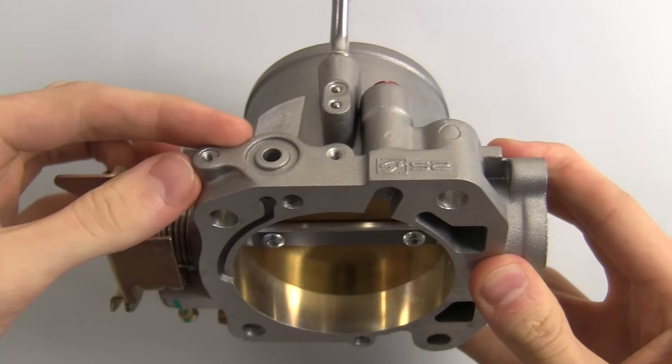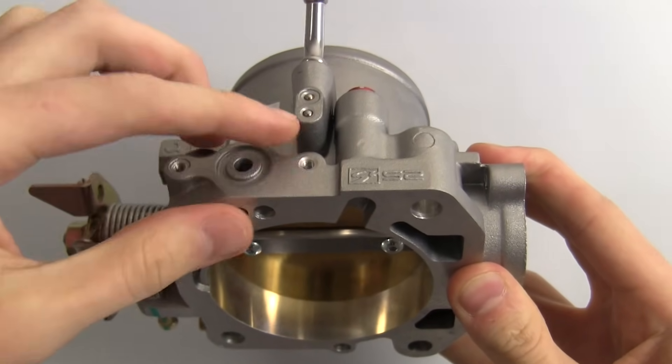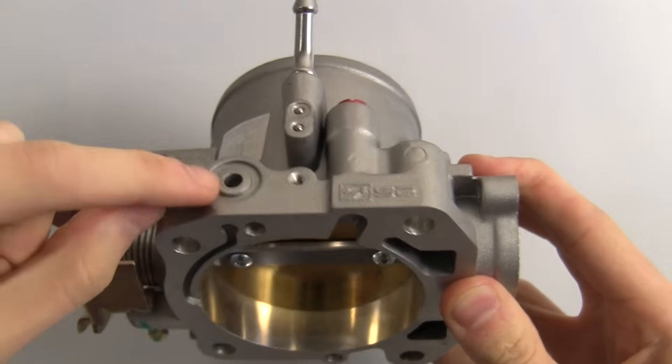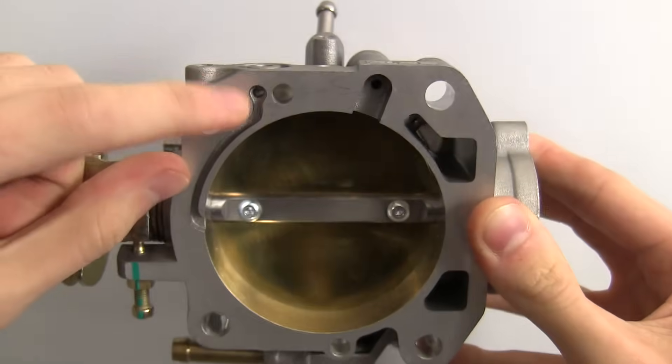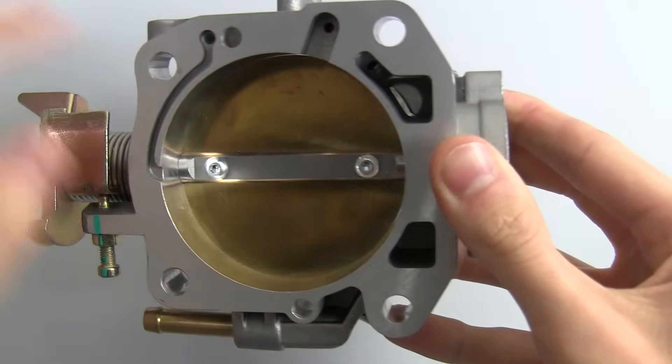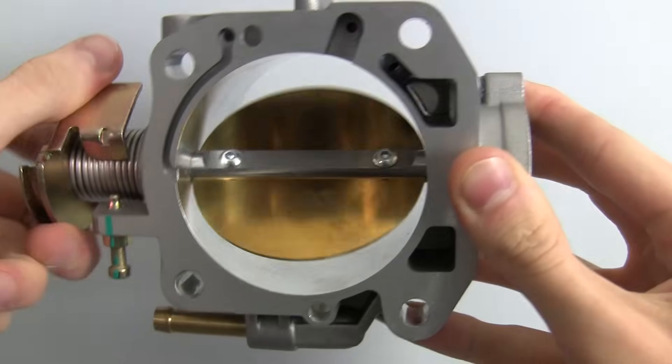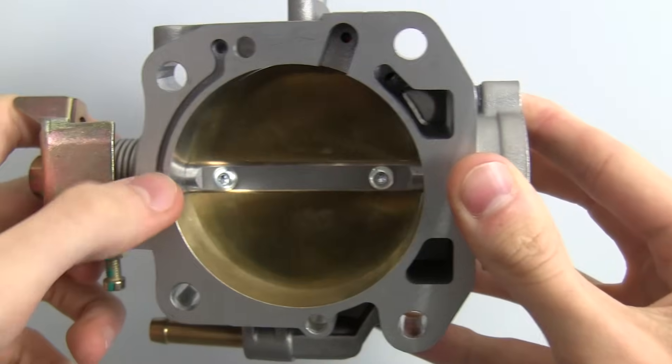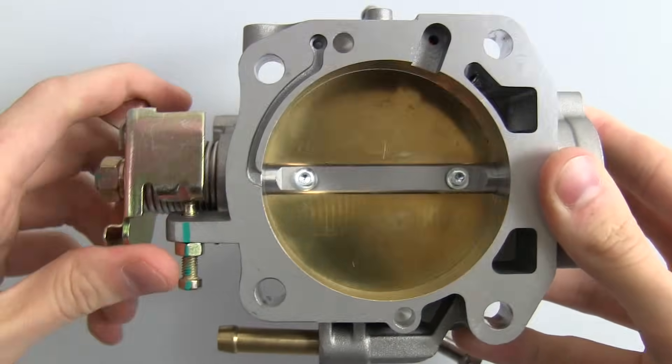Up on top we have the manifold absolute pressure sensor, the MAP sensor mounting, which mounts right here and you can see this hole here which comes down and feeds behind the throttle plate. So it's sensing the pressure behind this throttle plate. As you allow for more airflow in it'll read a higher pressure and the engine will know to inject more fuel.